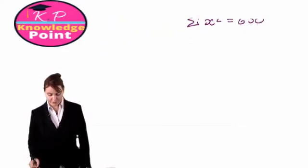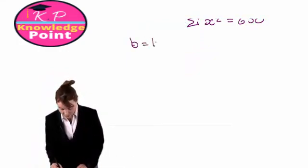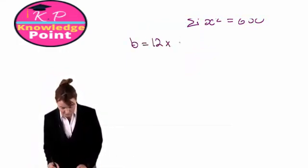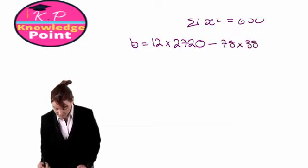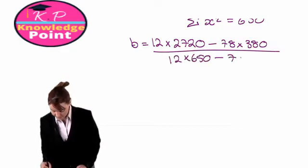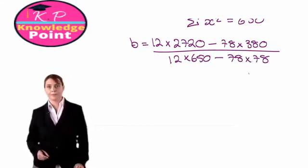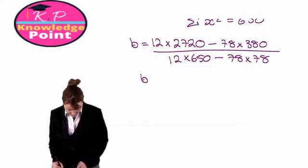If we insert this information then to our equation for b, we'll get b is equal to n times the sum of xy, so 12 times 2720 minus the sum of x times the sum of y, and divided by n times the sum of x squareds minus the sum of our x's squared. Punch that all into your calculator and work out the value for b.